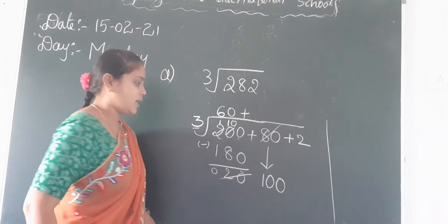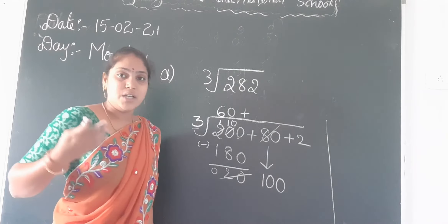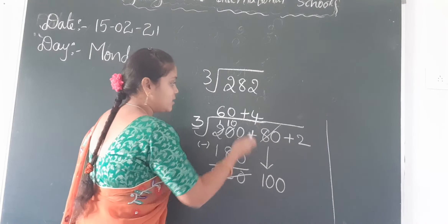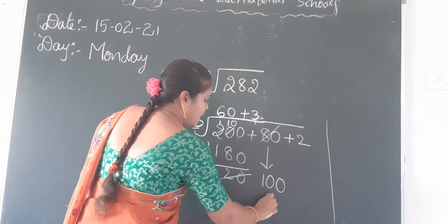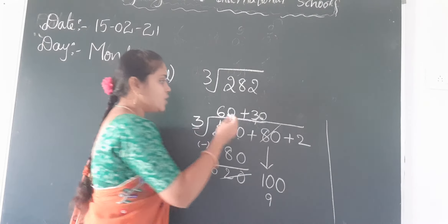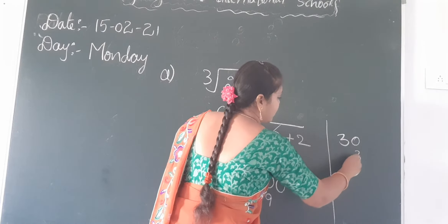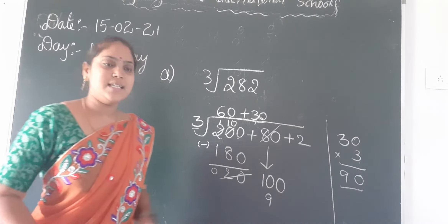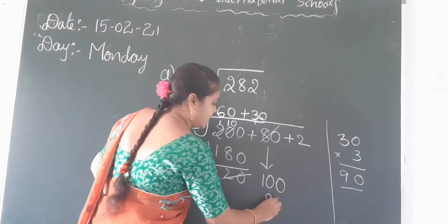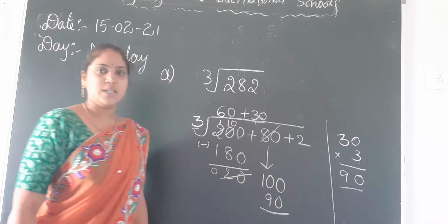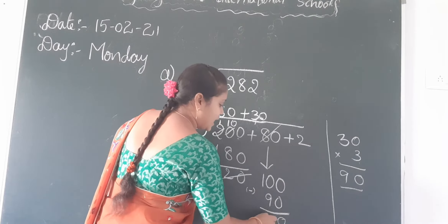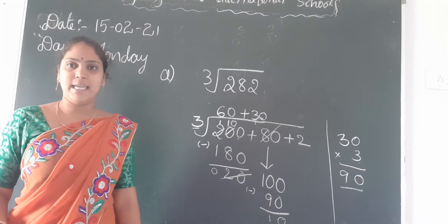Now write the place here. 3 times 30 is 90. Now do subtraction: 100 minus 90 is 10. Am I correct, children? 100 minus 90 is 10.